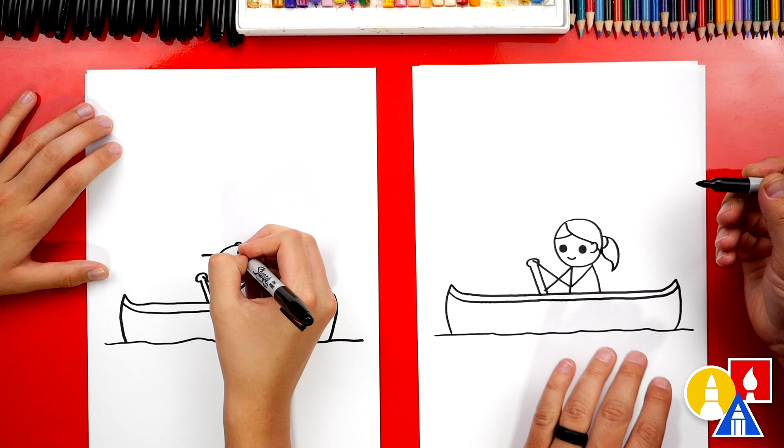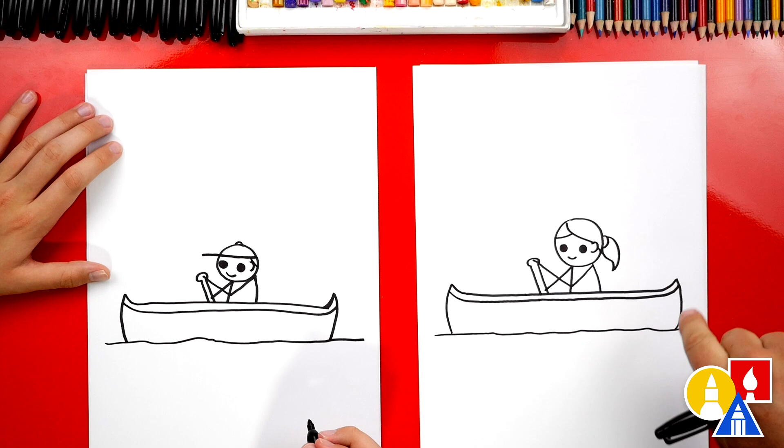Now you guys at home could add any details you want to your drawing and you could change your person. You could also add another person. Sometimes you can canoe with two. Or even more I think. Like a hundred people. Maybe not that many.